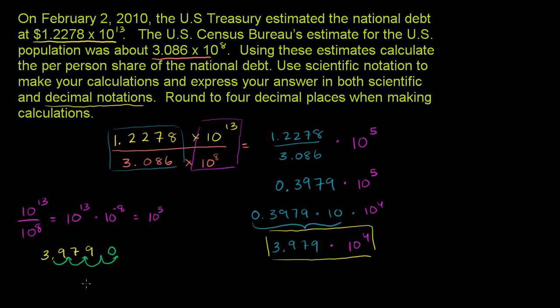This is equal to $39,790. So if you think about the national debt per person, every man, woman, and child in the United States essentially owes $39,790.